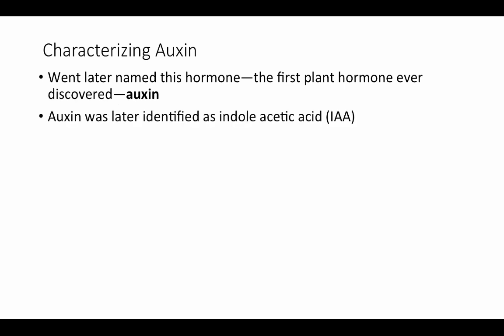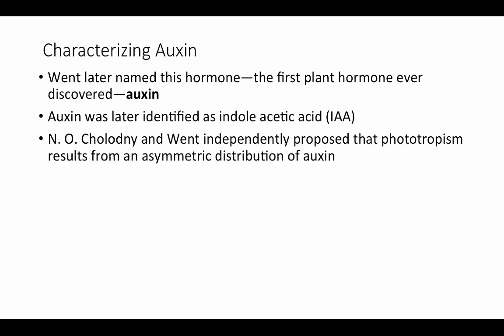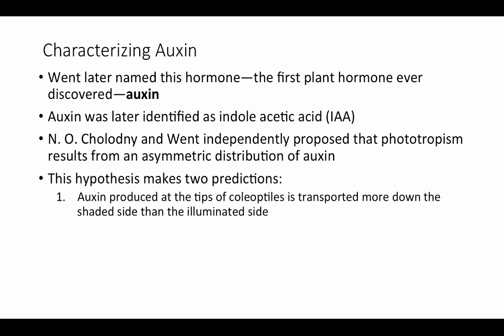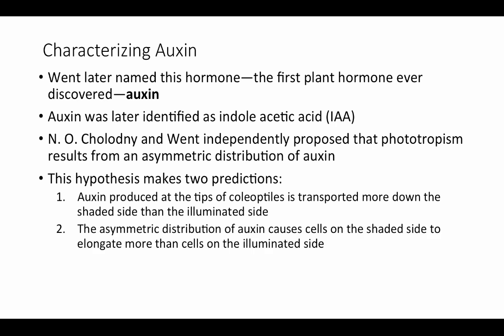Went named this substance, the very first plant hormone ever discovered, auxin. Auxin was later identified as indoleacetic acid. Went, along with another scientist, independently proposed that phototropism results from an asymmetric distribution of auxin. This hypothesis makes two predictions: auxin is produced at the tips of coleoptals and transported more down the shaded side than the illuminated side, and this asymmetric distribution causes cells on the shaded side to elongate more, causing bending toward the light source.